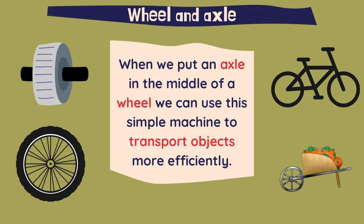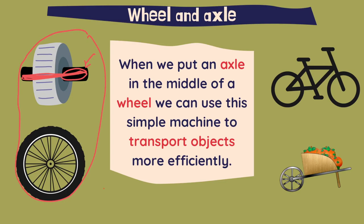Now the wheel and axle. This is the axle. When we put an axle in the middle of a wheel like this one, we can use this simple machine to transport objects more efficiently. We can also use this to create complex machines like a bicycle, which has two wheels with axles and many other parts that make a complex machine.